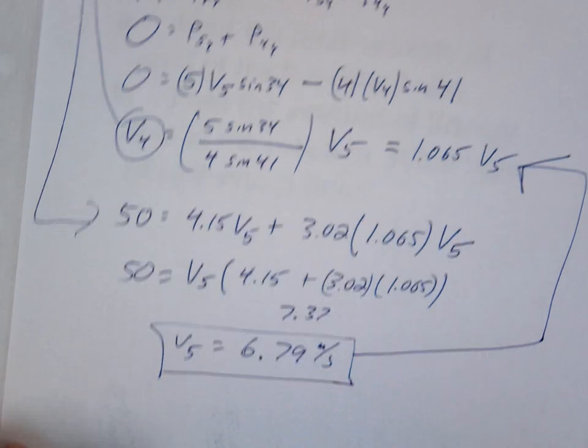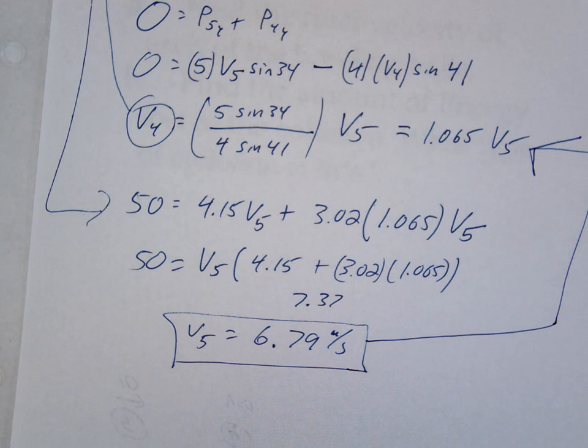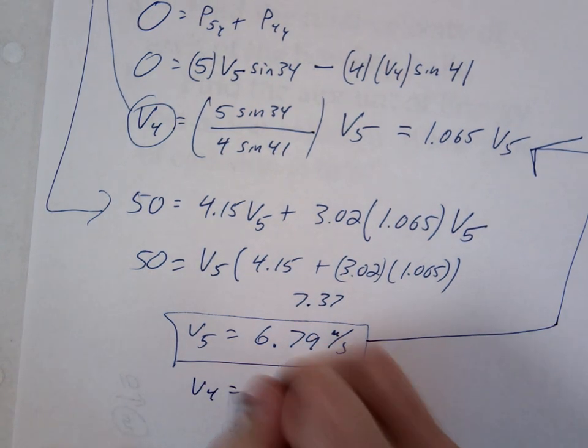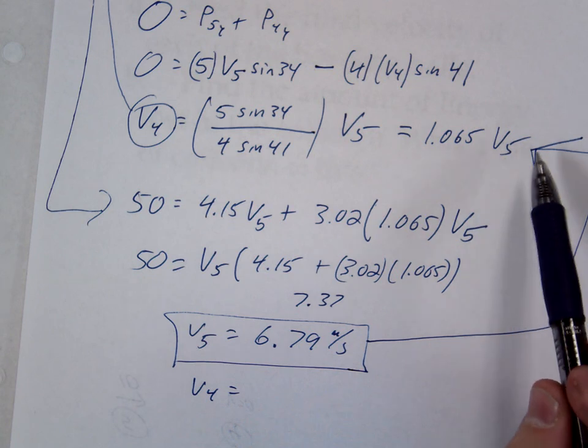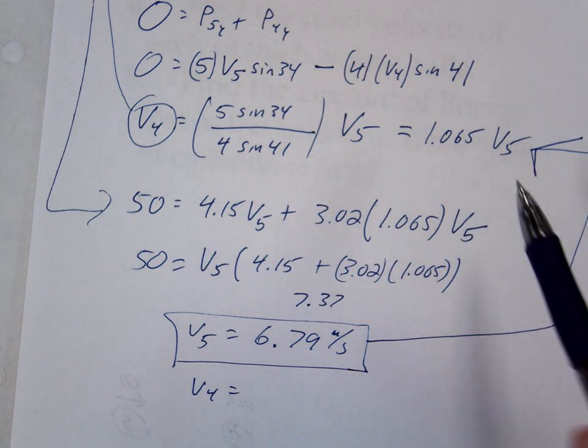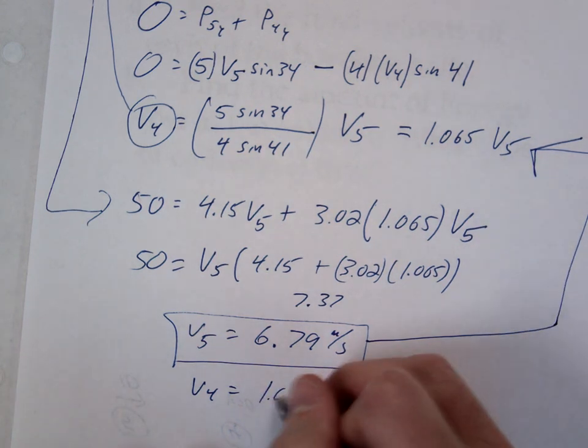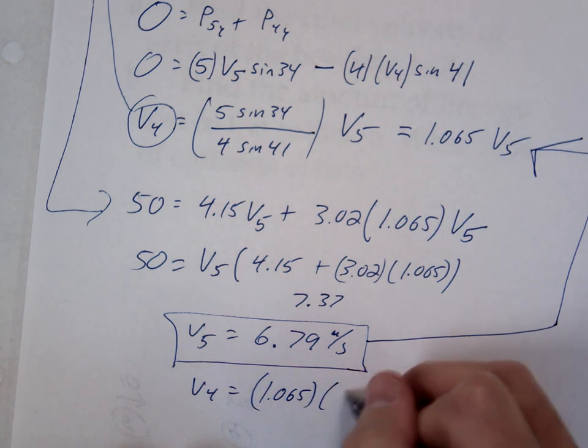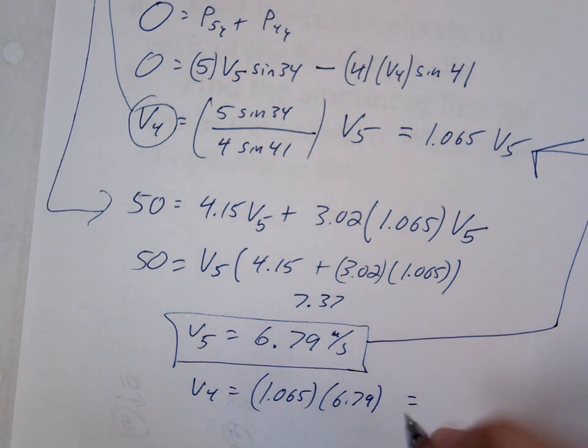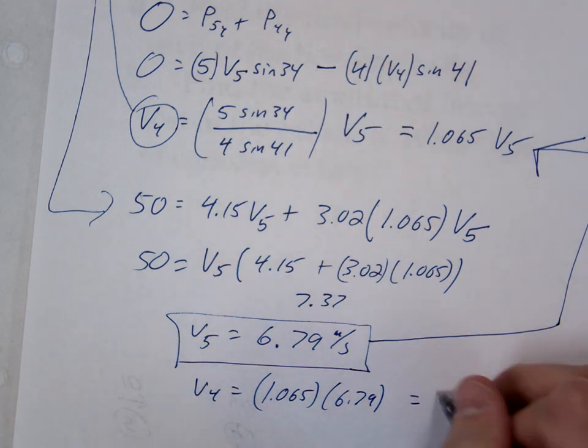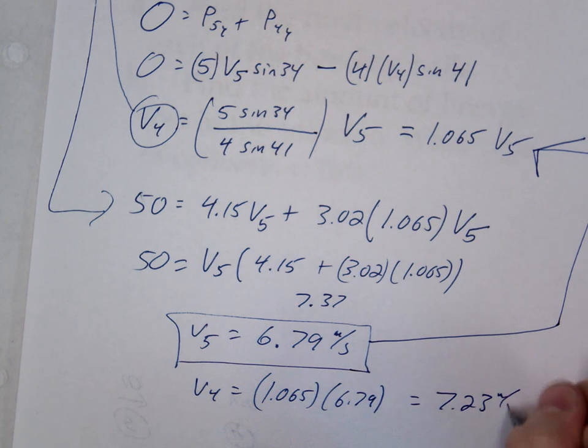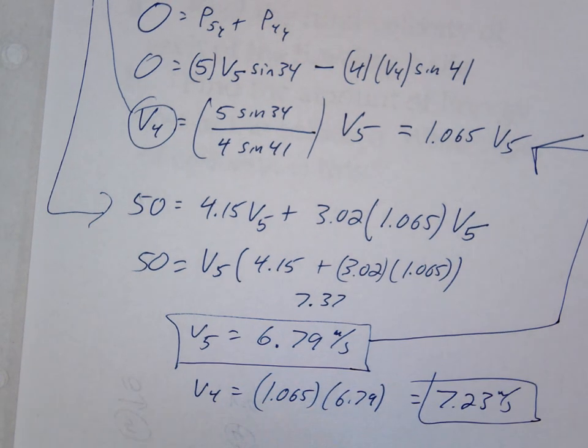Finally solve for your V4. So 1.065 times 6.79. 7.337.